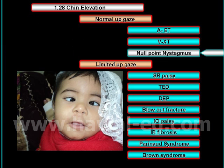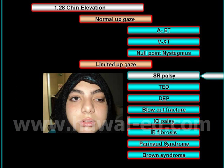The second cause of chin elevation with normal elevation of both eyes is manifest congenital nystagmus, where sometimes in these children the nystagmus has its null point in down gaze.